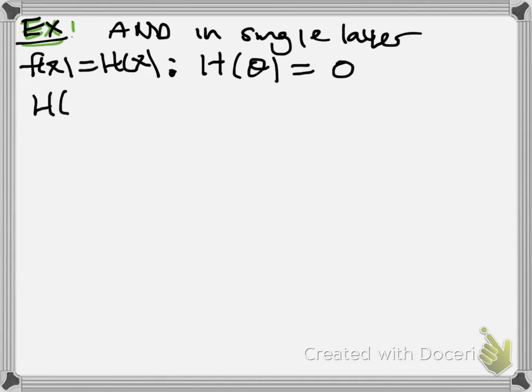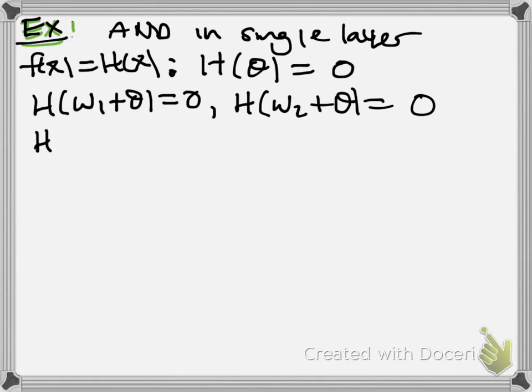Similarly, for h of w1 plus theta, we should also get 0 for an AND operation, because only one of the inputs is 1, and if only x2 is 1, then also we should get 0 in this case. And the only way we should get 1 is if both x1 and x2 are equal to 1.